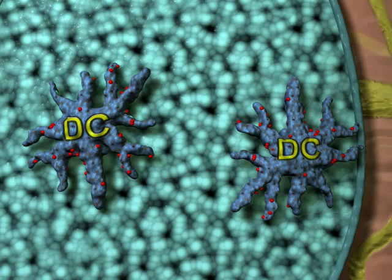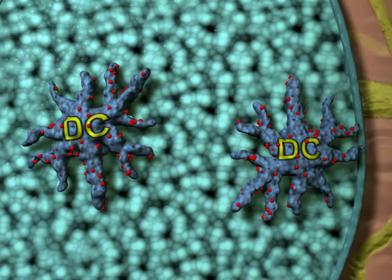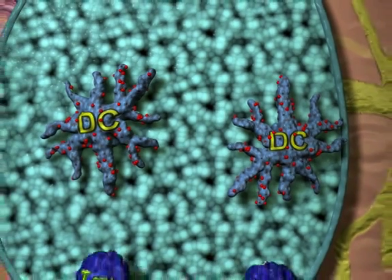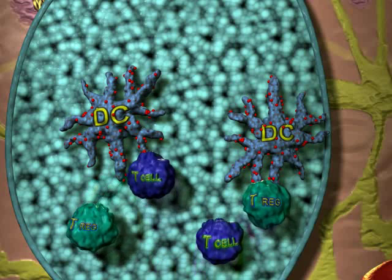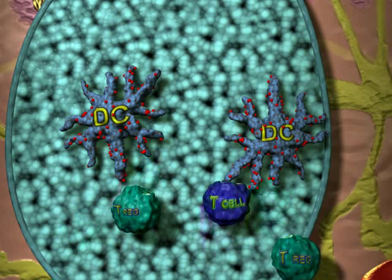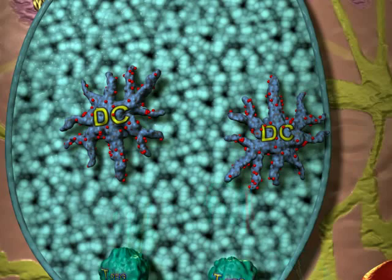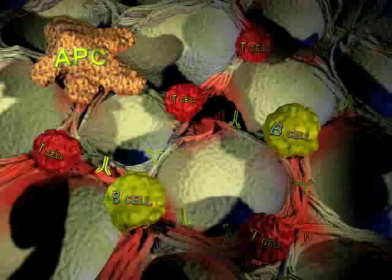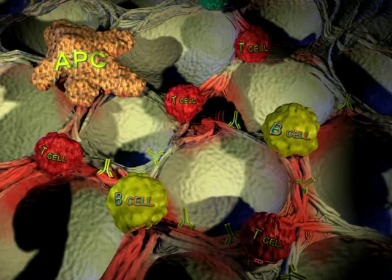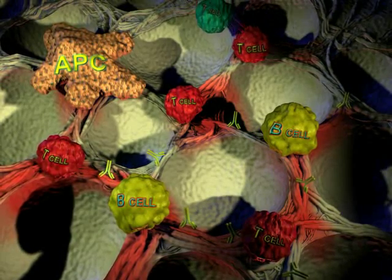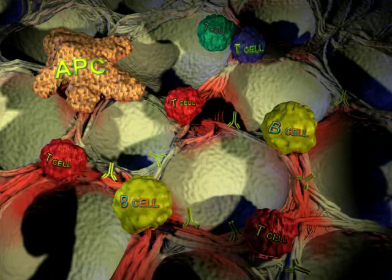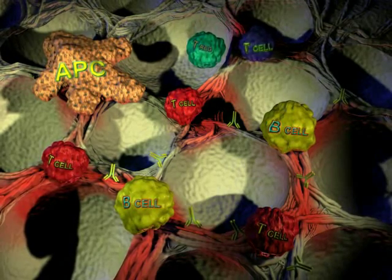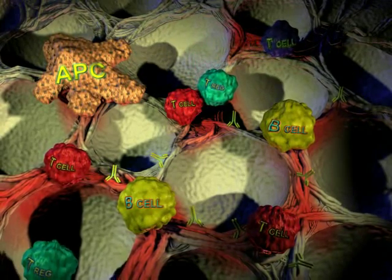traveling through the gut to the distal portion of the ileum, where dendritic cells in the Peyer's patches collect the antigen and induce activity of regulatory T-cells, or Tregs, specific for this autoantigen. The activated Tregs traffic to the sites of injury and inflammation, where they down-regulate the autoimmune disease through the release of cytokines such as TGF-beta and IL-10.